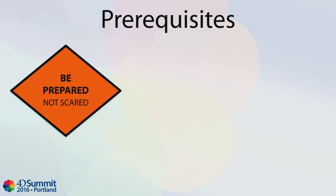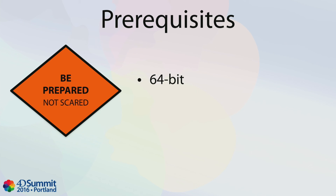You must do something in your code to take advantage of multi-core. The first thing to do is easy: use 64-bit 4D applications. As a reminder, 4D Server is available on both Mac and Windows in 64-bit. The 64-bit version of 4D single user and 4D Volume License are available today as a preview for our release program and will be released very soon. Your 4D application must be compiled for your 4D process to run in preemptive mode.